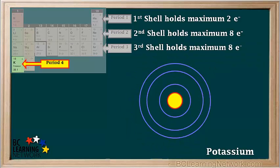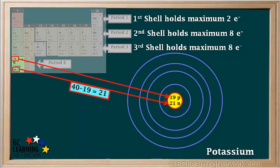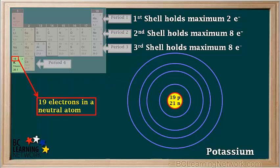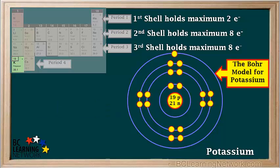The next element, potassium, is the first element in Period 4. Since we're starting a new period, we need to add another shell to our model — so now we have 4 shells. Potassium has 19 protons, and 40 minus 19 equals 21 neutrons in its nucleus. A neutral potassium atom has 19 electrons, which could be arranged like this. So this is our Bohr model for potassium: its first three shells are completely filled, and it has one unpaired electron in its fourth shell.